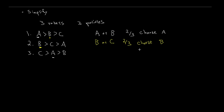This is getting a bit odd. Final case — let's do a pairwise comparison of C or A. Person one prefers A, person two prefers C, person three also prefers C. Two votes for C, so two-thirds of the people in society will choose C. We get a bit of an oddity: altogether we get six-thirds — everybody's voting for everything. It turns out to be a complete paradox.